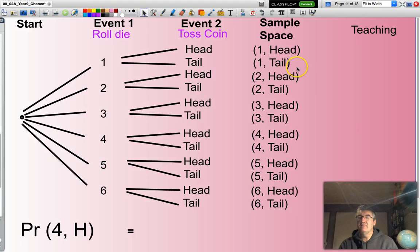And how many events are in my sample space? If you count all those up, there are twelve. So there you have it. The answer that I'm looking for is one twelfth.